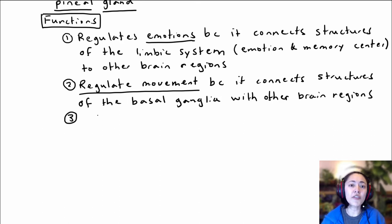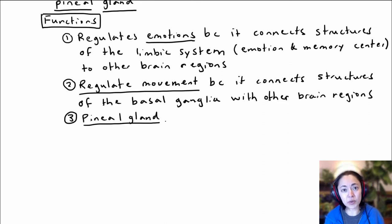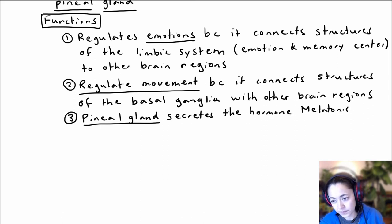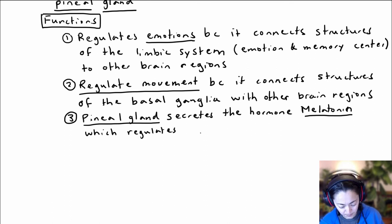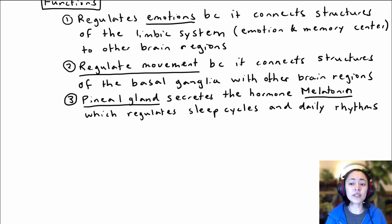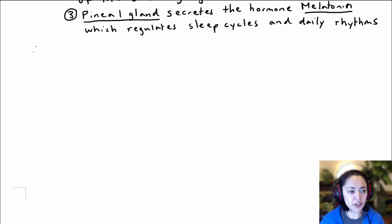The third major function of the epithalamus is associated with the pineal gland. The pineal gland is a small gland in the back of the epithalamus and it secretes the hormone melatonin. Melatonin is important in helping to regulate our sleep cycles as well as our daily rhythms, which we often call our circadian rhythms. The pineal gland starts to increase its production of melatonin once it starts getting dark, and then levels start to fall again as morning approaches.